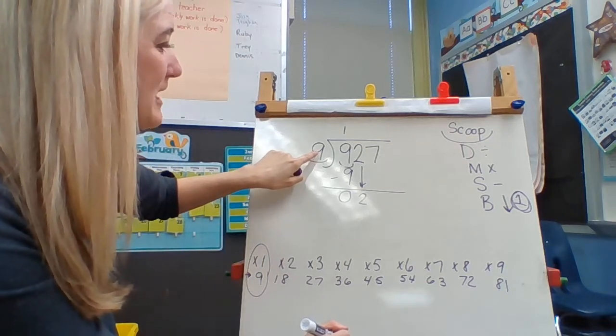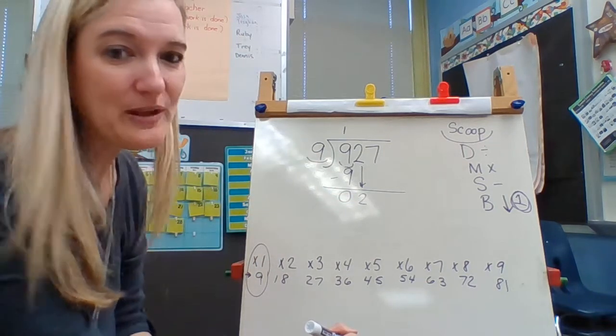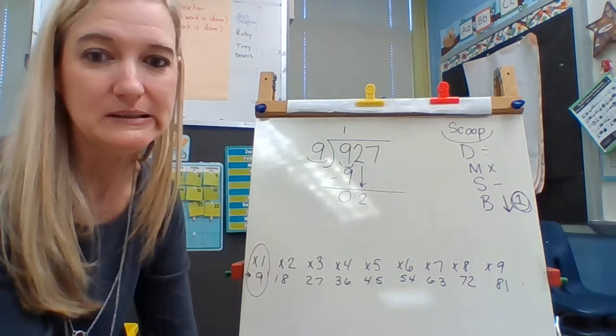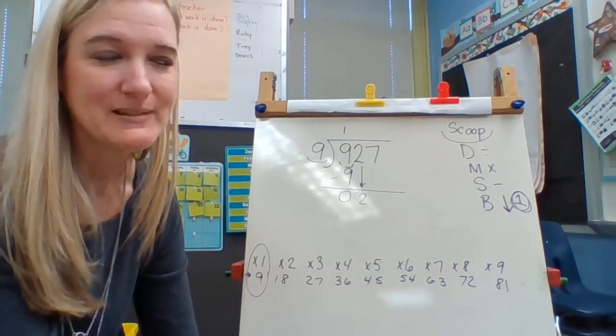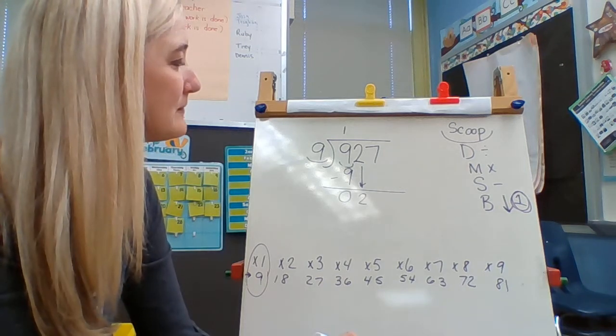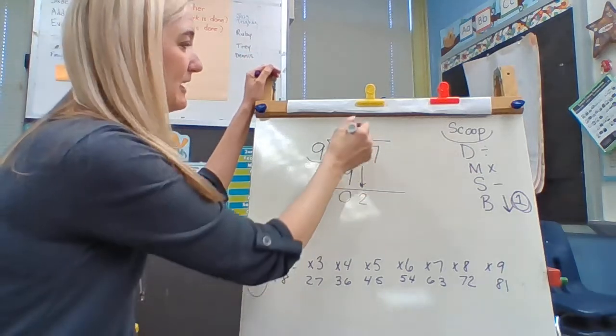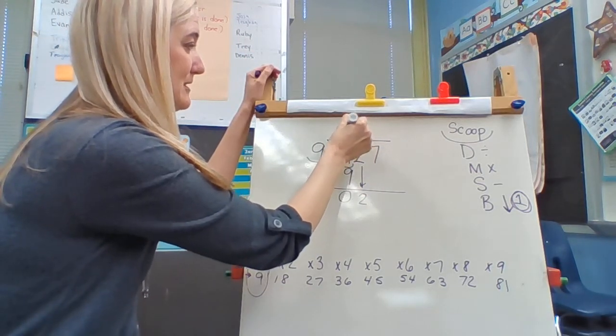So how many times can 9 go into 2 without going over? I don't see any. So let me think about that. Hmm, it's 0. So 9 can't go into 2 without going over, so it's 0.